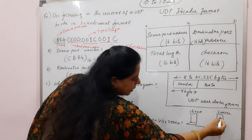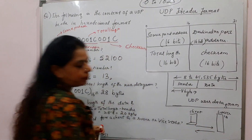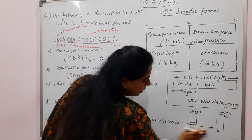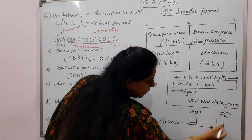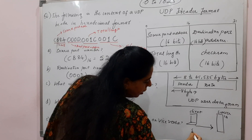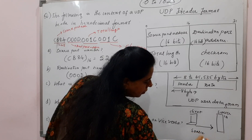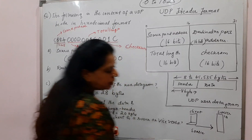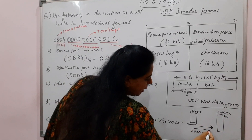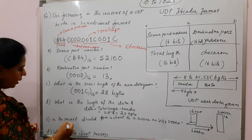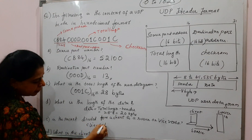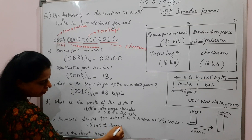Since the destination port address is 13 — a well-known port number — that means the destination is the server. Therefore, the packet is initiated from the client. The client is the source and the server is the destination. So this packet is traveling from the client to the server.